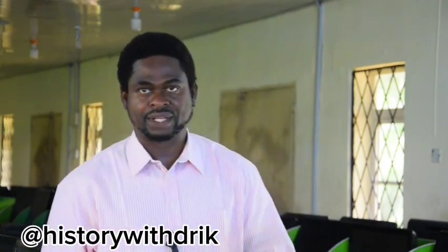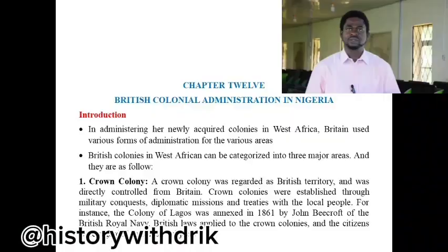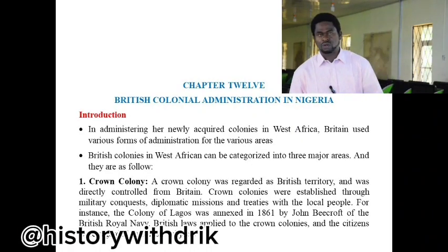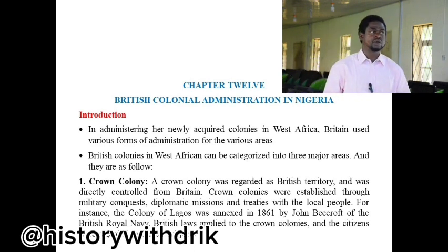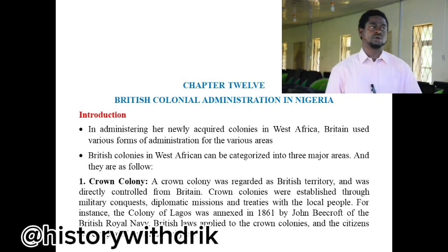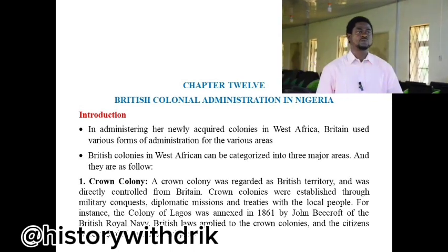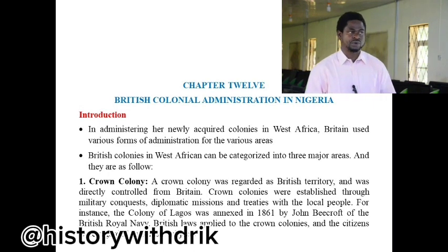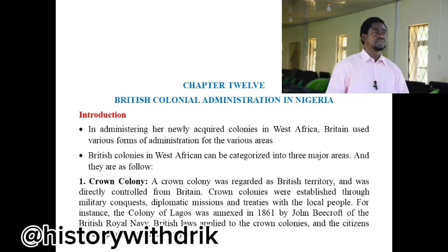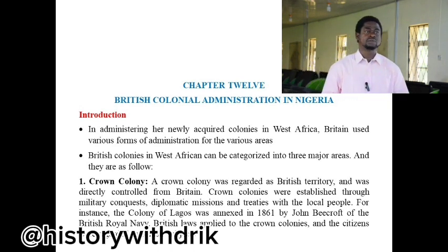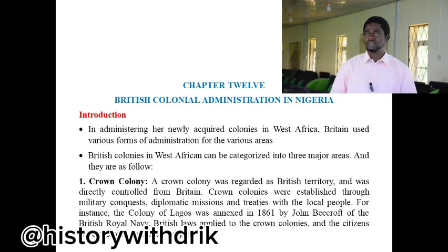We identify three types. Number one is the one they called Crown Colony. A Crown Colony was regarded as a British territory and was directly controlled from Britain. Crown colonies were established through military conquests, diplomatic missions, and treaties with the local people. For instance, the colony of Lagos was annexed in 1861 by John B. Croft of the British Royal Navy. British laws applied to the Crown colonies and the citizens were regarded as British subjects.